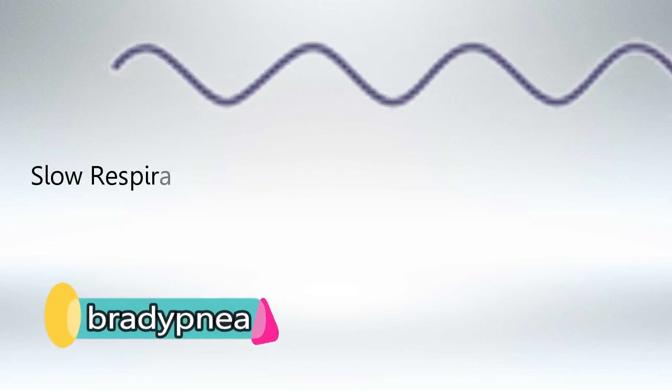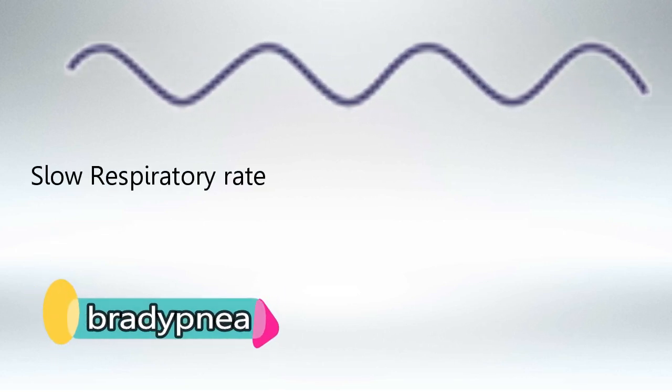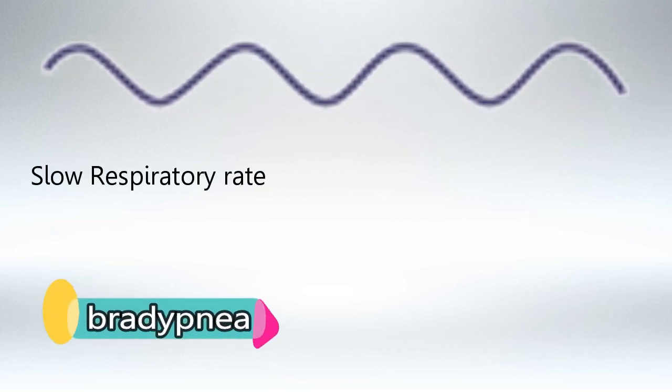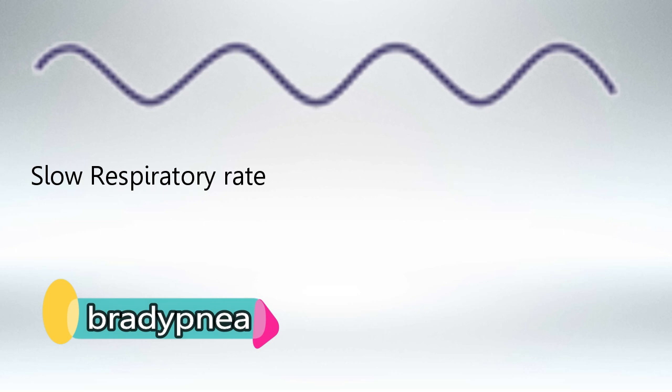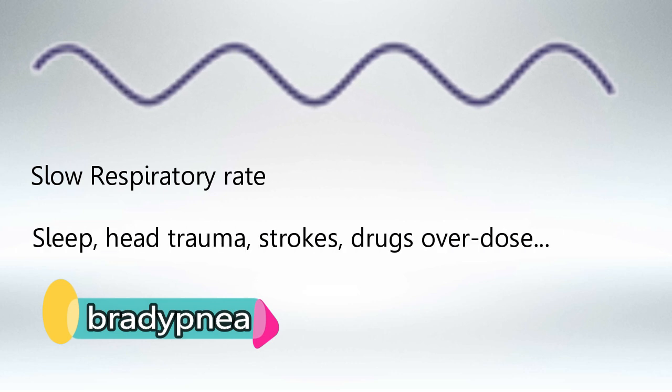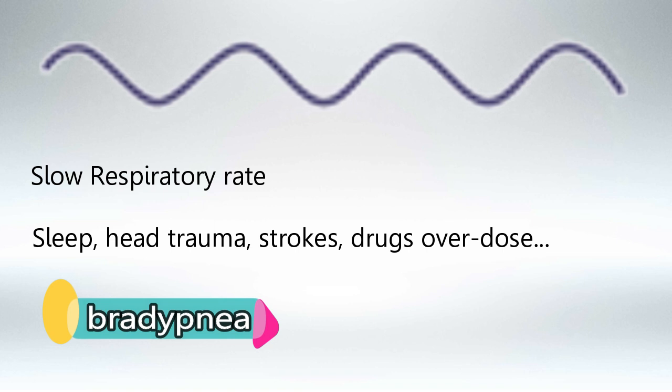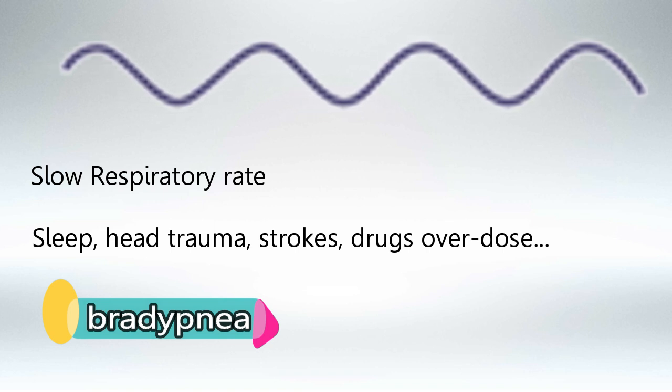Next we have bradypnea, and as you can see the wavelength is very shallow and slow. We see this mainly in sleep, illness, injuries, and drug overdose.